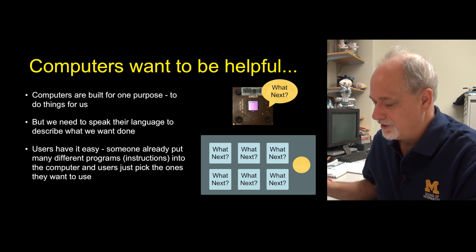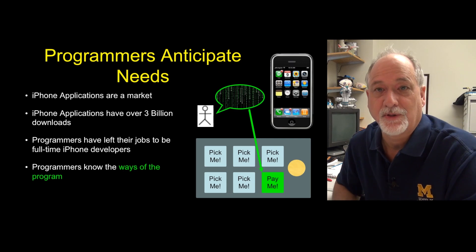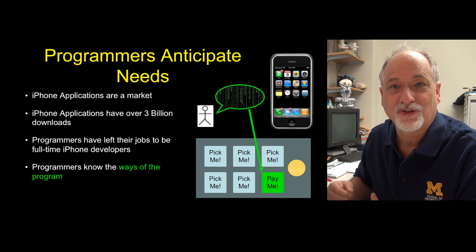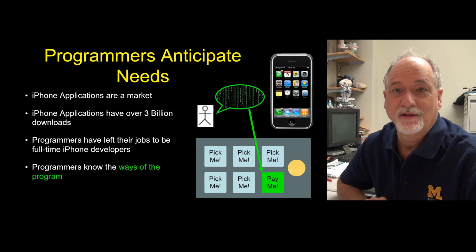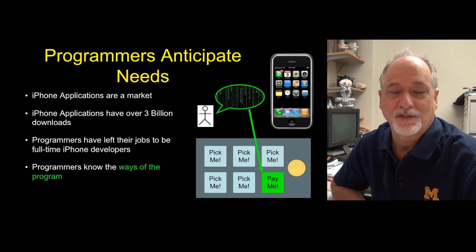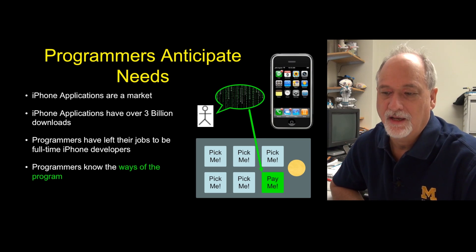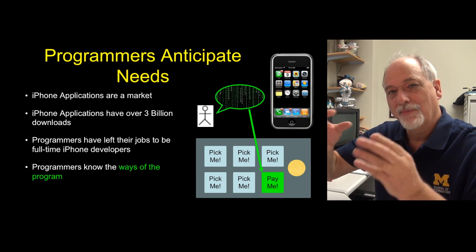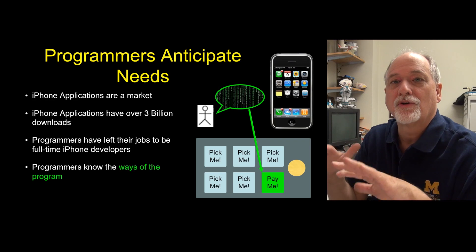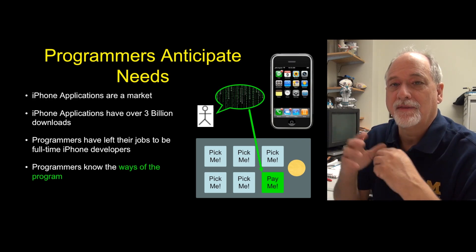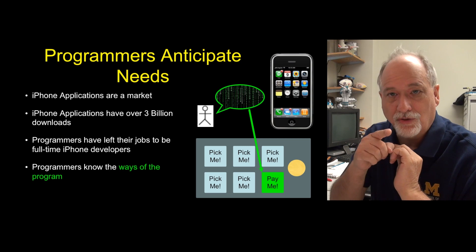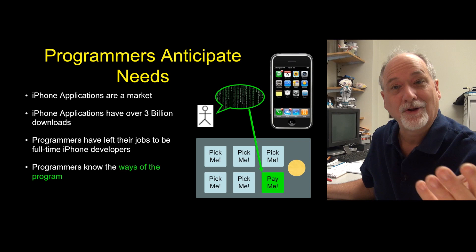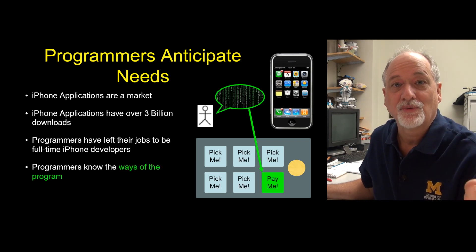It is much easier for us to learn to speak their language than it is for them to learn to speak ours. Although with these cell phones we're starting to see little bits where they can begin to understand. But you would be amazed at the 40 or 50 years it has taken us to understand how to build programs to begin to understand. I'm bringing you into something where you are going to learn the ways of programming, because it's easier to teach you how to program than it is to teach the computer how to work in your world. The goal is to get this to do work for you.